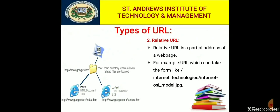The second type of URL is the relative URL. A relative URL points to a directory or file in relation to the present file or directory only. It is a partial address of a web page, unlike the absolute URL which is the complete address. The protocol and server part are omitted from a relative URL. For example: /internet_technologies/internet-osi_model.jpg — here, the protocol and domain name are not mentioned.